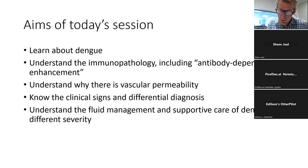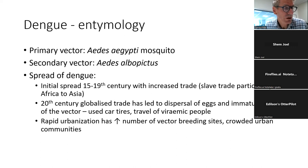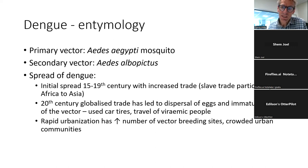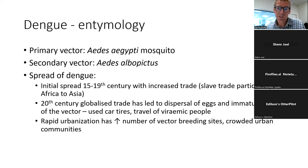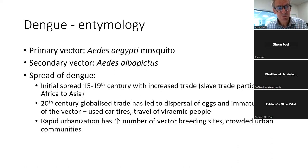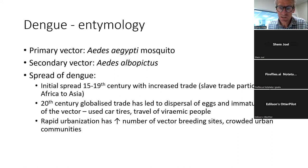Dengue is a flavivirus transmitted mostly by the Aedes aegypti mosquito. Aedes aegypti has been around for hundreds of years, emerging in the 15th century. From the 15th to 19th century, increased global trade — particularly the slave trade — spread Aedes aegypti from Africa to Asia through tropical regions. In the 20th century, globalized trade further dispersed the eggs and immature forms of Aedes aegypti widely on container ships.